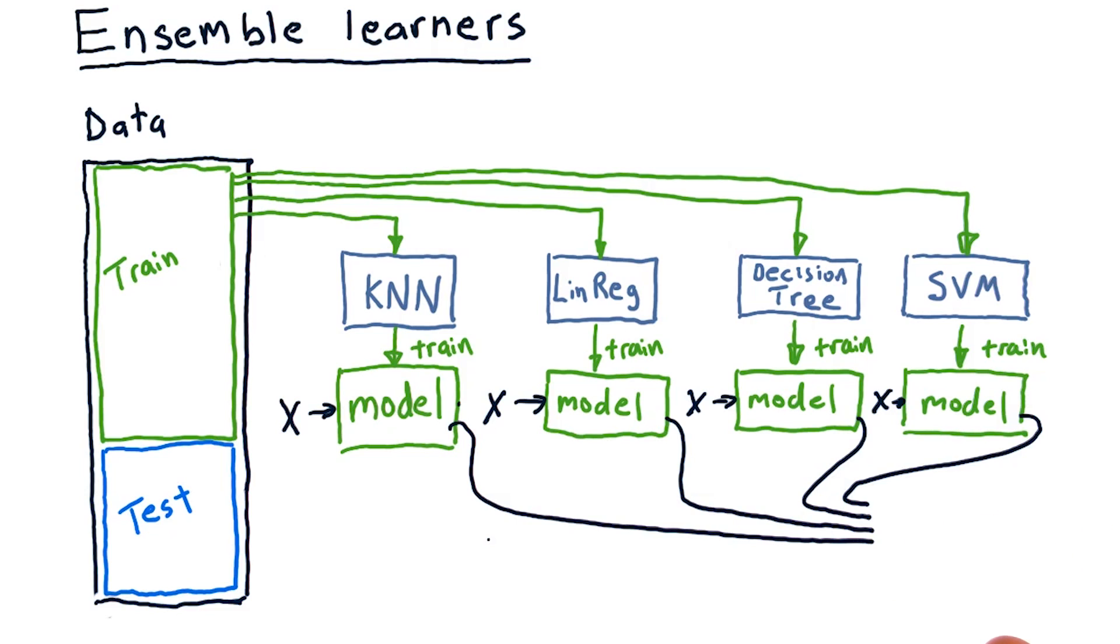If we're doing classification where, for instance, we're trying to identify what the thing is, we might have each of these Ys vote on what it is. But we're doing regression, and so the typical thing to do here is to take the mean. And that is the result for this ensemble learner.